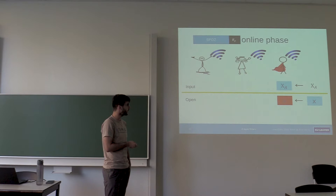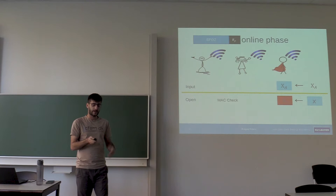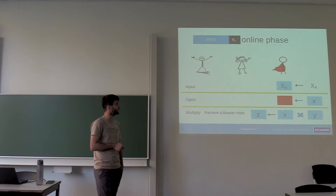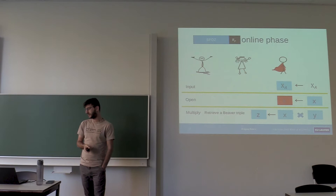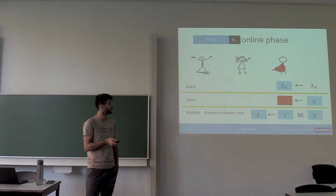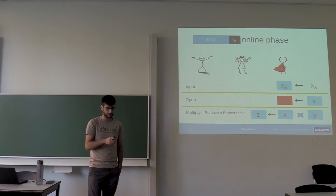How do you go from a box to something clear? Every party broadcasts their shares, and there's a MAC check at the end of this phase. To multiply: it's more complicated. If you have two secrets and want to multiply them, you need to retrieve special pre-processing called a Beaver triple. We won't dive into the details, but it's some openings. The main cost for multiplying is basically producing that Beaver triple.